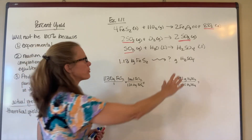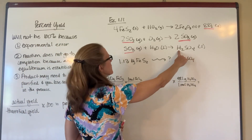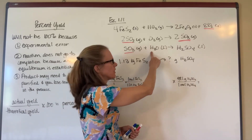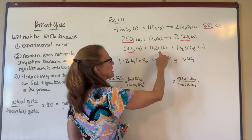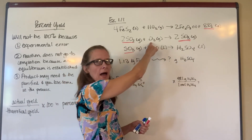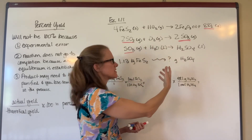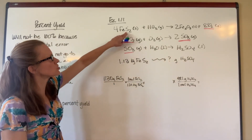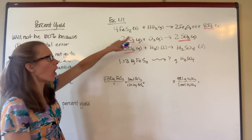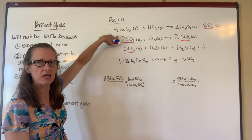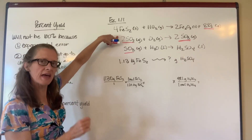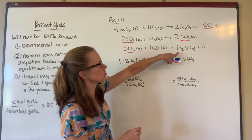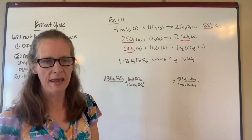If I look at my product H₂SO₄, the hydrogen is going to come from the water, which I had excess of. The oxygen is going to come either from the water or from the oxygen gas — again, both of which I had excess of. That leaves me with the sulfur. I know exactly how much sulfur I had because all of it came from the FeS₂. So knowing that, I'm going to be able to figure out how much sulfuric acid I'll end up with.